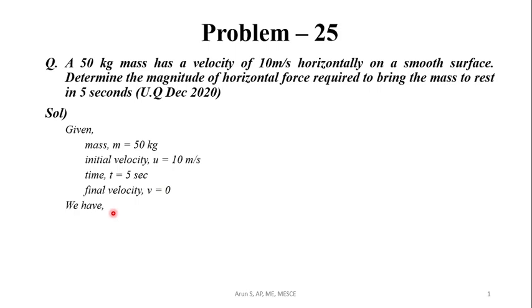We have v = u + at, where a is the acceleration of the body. Substituting the values: v = 0, u = 10, t = 5 seconds. We can get a = -10/5 = -2 meters per second squared. That is 2 meters per second squared deceleration.